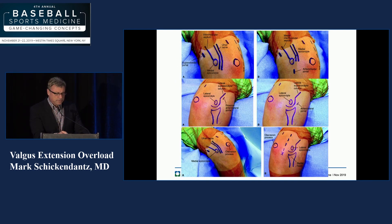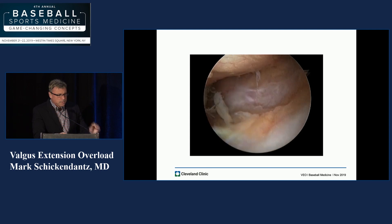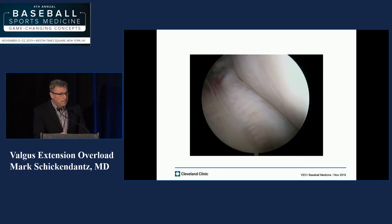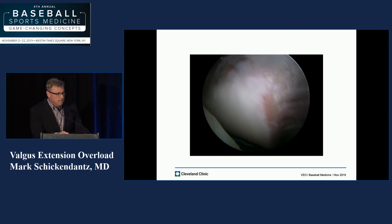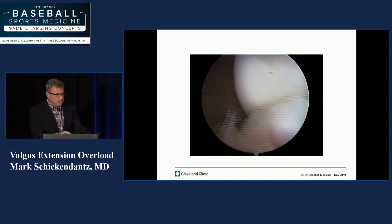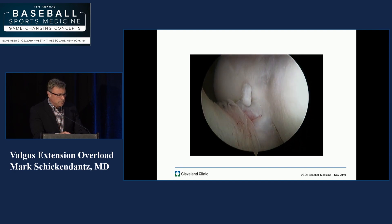There's a multitude of different portal sites that allow us access to the elbow in the operating room. Our posterior compartment debridement basically consists of removal of loose bodies, a synovectomy, and excision of the olecranon tip spur. The arthroscope is in the posterolateral portal of a right elbow. What we see on the bottom is the olecranon tip, and you can see that little spur, very similar to what you saw on the MRI. As the elbow comes into extension, you can see where that might impinge up in the back of the fossa and the distal humerus, relating to symptoms.